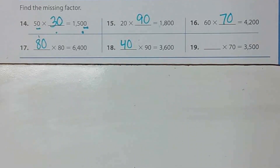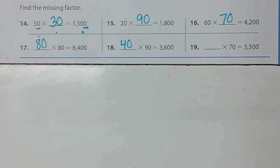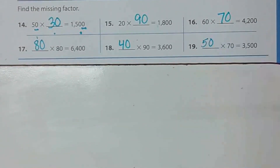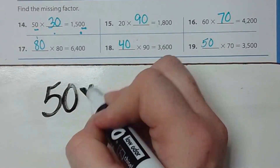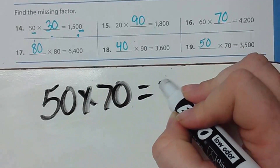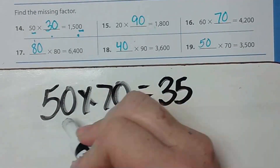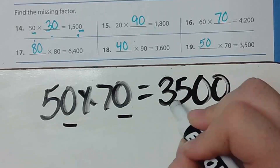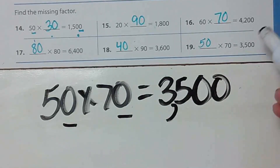Number 19: what number times 70 equals 3500? Seven times what is 35? Seven times 5 is 35, so maybe 50. Let's check: 50 times 70 — 5 times 7 is 35, add two zeros — 3500. Yes, 50 times 70 equals 3500. Correct!